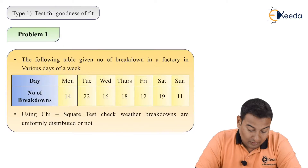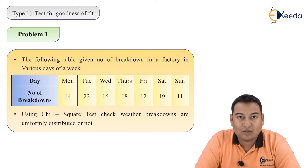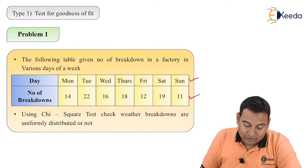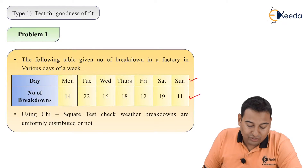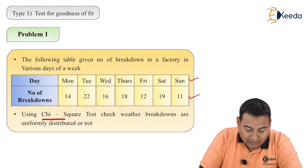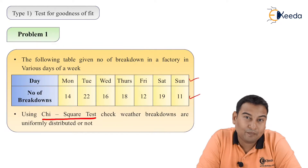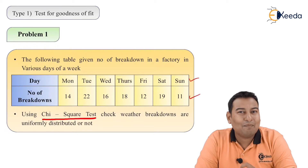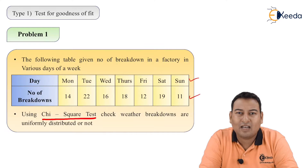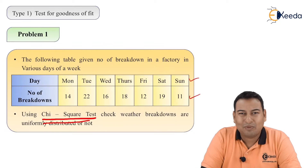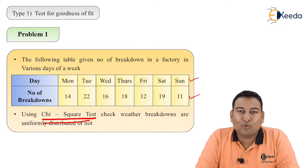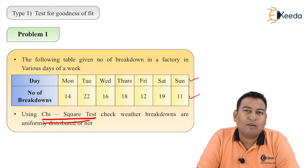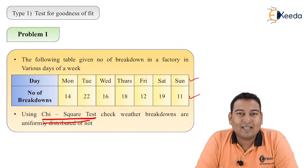The given problem: the following table gives the number of breakdowns in a factory on various days of the week — Monday to Sunday. Using chi-square test, check whether the breakdowns are uniformly distributed or not. Chi-square is clearly mentioned in the problem. Also, the problem talks about only one factor — breakdowns — therefore it belongs to goodness of fit. Goodness of fit means whether the data satisfies a given condition.